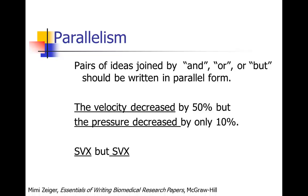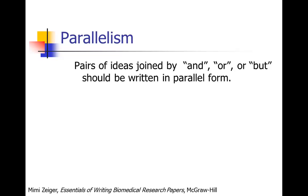If you want to read more about this, especially those of you in the biomedical sciences, I'll refer you to a really good book on scientific writing by Mimi Zeiger called 'The Essentials of Writing Biomedical Papers.' She gives some examples of pairs of ideas joined by 'and,' 'or,' or 'but' that need to be in parallel form. It's a really nice reference — quite a bit longer than Strunk and White but has some really good information, and I'll be referring to material from her book throughout this course.